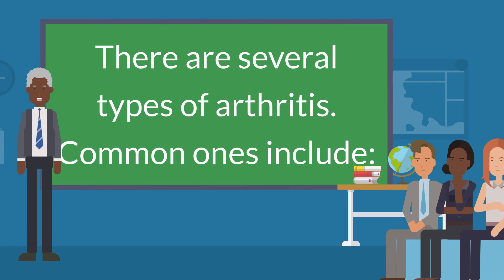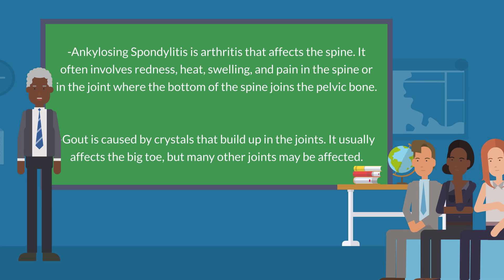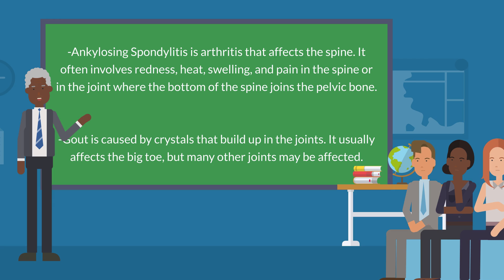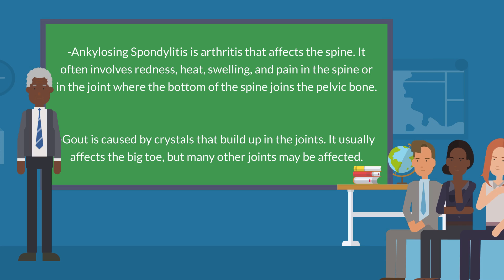There are several types of arthritis. Common ones include: Ankylosing spondylitis, which is arthritis that affects the spine. It often involves redness, heat, swelling, and pain in the spine or in the joint where the bottom of the spine joins the pelvic bone.